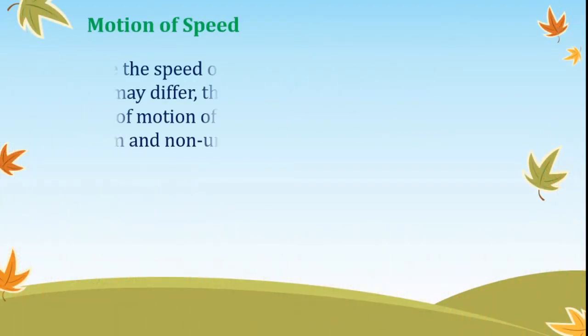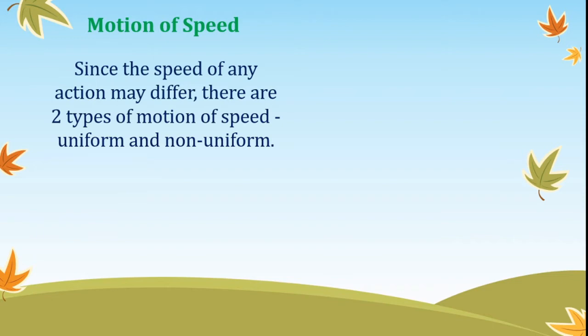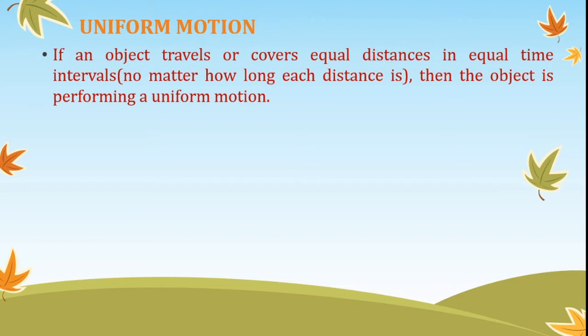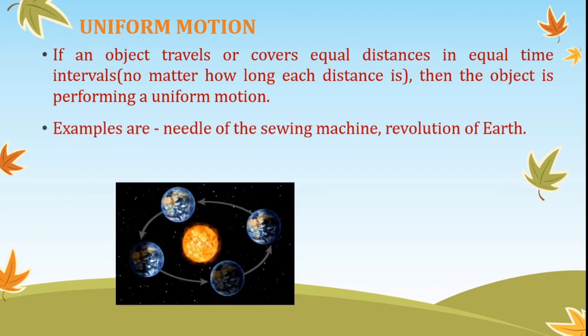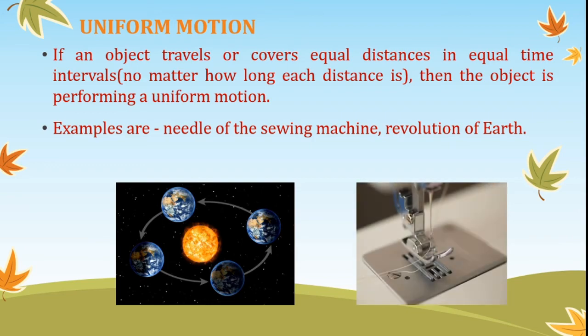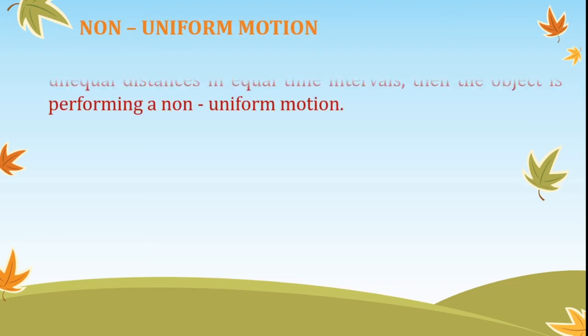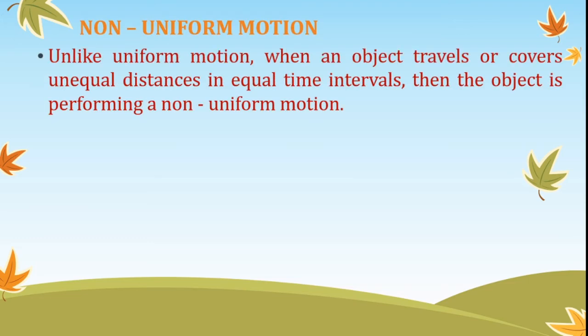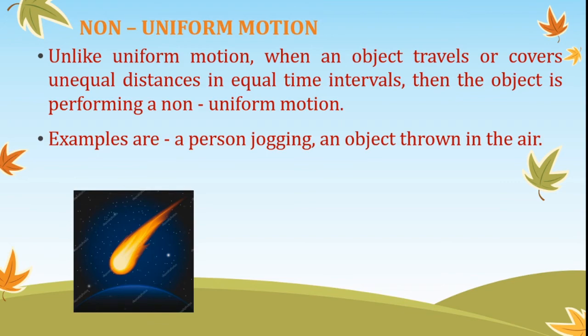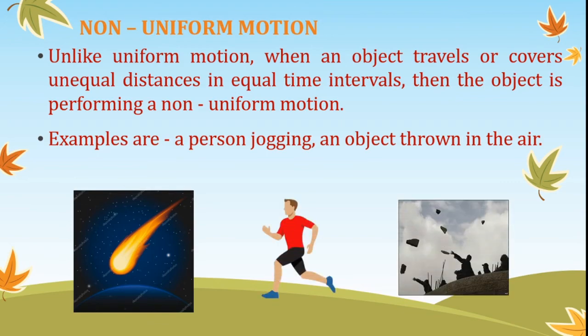Motion of speed. The speed of any action may differ. Motion of speed can be uniform and non-uniform. Uniform motion is when an object travels or covers equal distances in equal time intervals. The needle of a sewing machine and the revolution of Earth are examples of uniform motion. Non-uniform motion is when an object covers unequal distances in equal time intervals. An asteroid falling, a person jogging, or an object thrown in the air are examples of non-uniform motion.